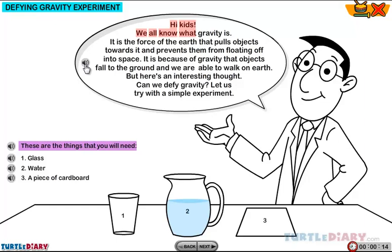Hi, kids. We all know what gravity is. It is the force of the Earth that pulls objects towards it and prevents them from floating off into space. It is because of gravity that objects fall to the ground and we are able to walk on Earth.